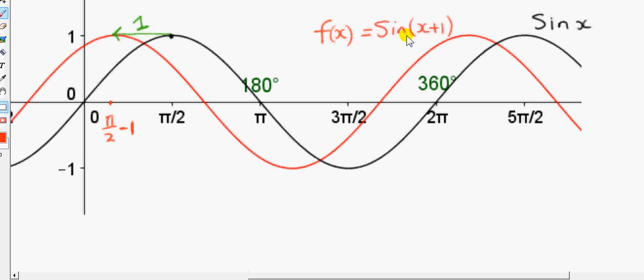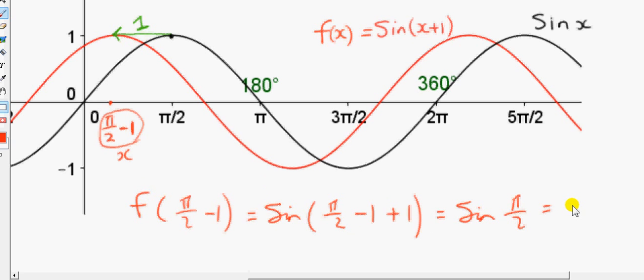So I'll call this function f of x. So let's work out f of this quantity here, f of π over 2 minus 1. Well, we just plug π over 2 minus 1 in for x. And you see we have to add 1. So this here is x, x is π over 2 minus 1. And in this function, we have to add 1 onto it. So you see we get sin of π over 2, and we know that that's equal to 1.